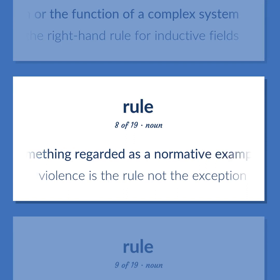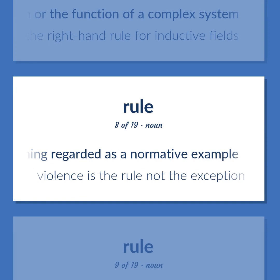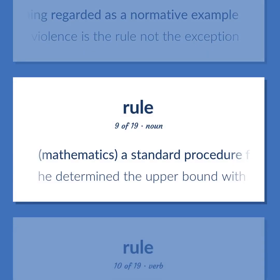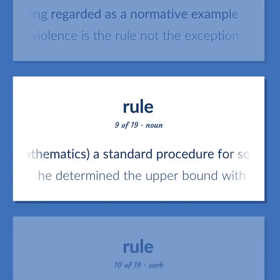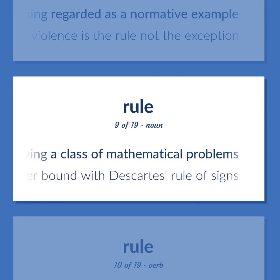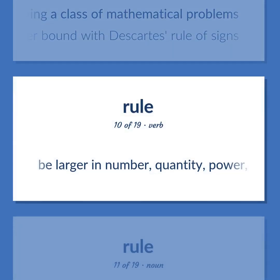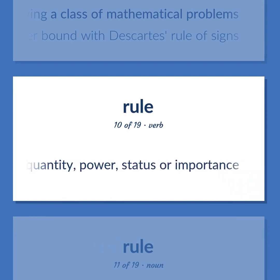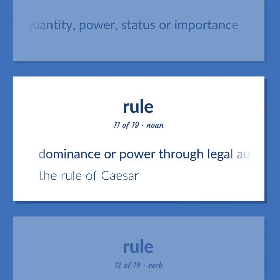Rule: something regarded as a normative example — violence is the rule, not the exception. Mathematics: a standard procedure for solving a class of mathematical problems — he determined the upper bound with Descartes' rule of signs. Be larger in number, quantity, power, status, or importance. Dominance or power through legal authority — the rule of Caesar.